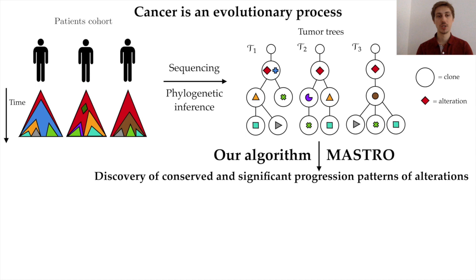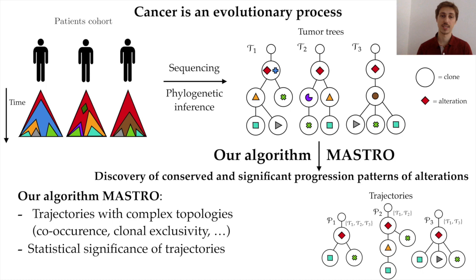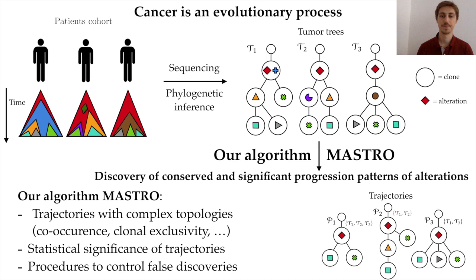This was the motivation for our algorithm MASTRO, for the discovery of conserved and significant progression patterns of alterations. Our algorithm can find trajectories with complex topologies that directly encode co-occurring and clonally exclusive interactions of alterations. It is based on new statistical tests to assess the significance of the order of alterations within trajectories, and on powerful procedures to control false discoveries, providing rigorous guarantees to its output.